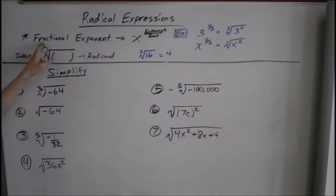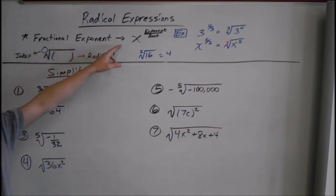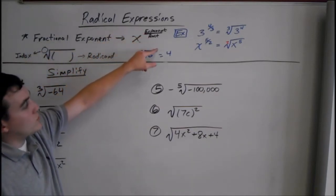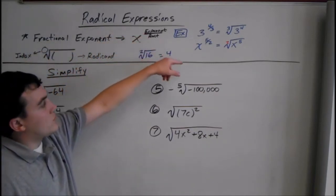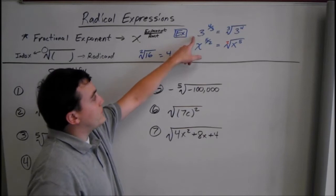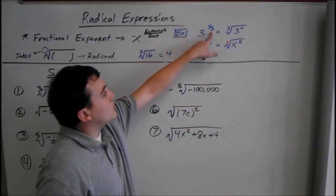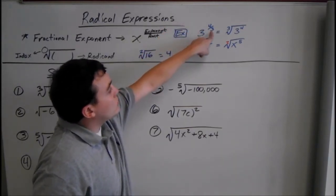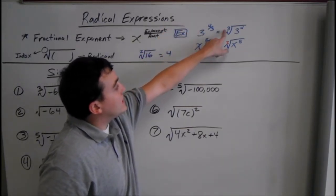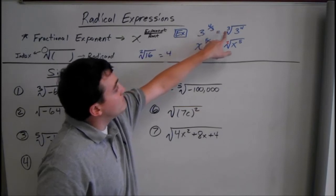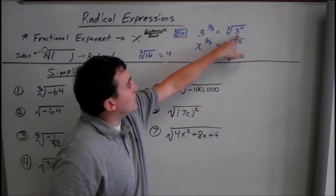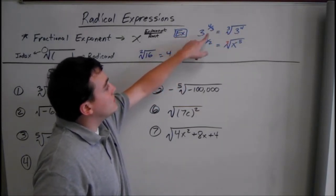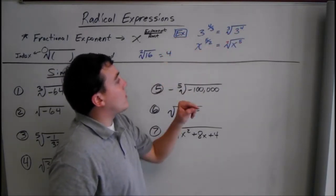Another thing you need to know is when you have a fraction exponent, it's exponent divided by the root. So for example, say we have 3 to the 4 thirds. 4 is our exponent and 3 is our root. So we have the cube root of 3, which is the base, to the 4th power.